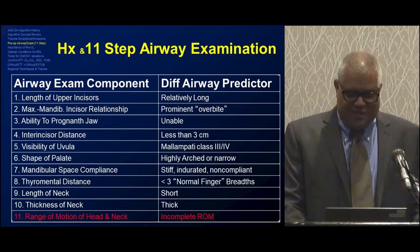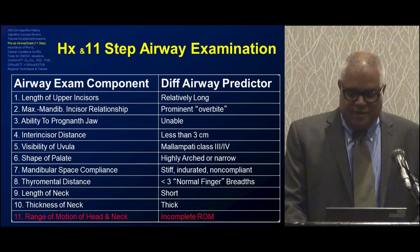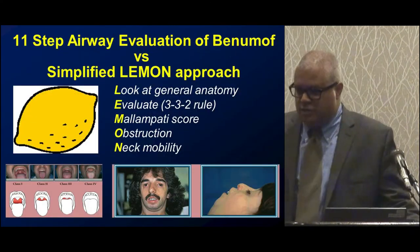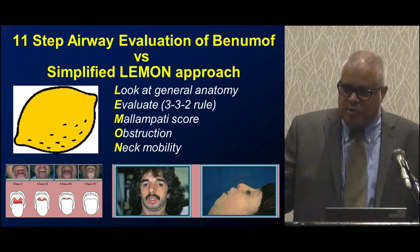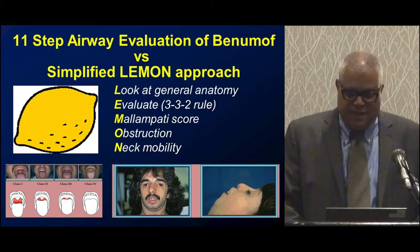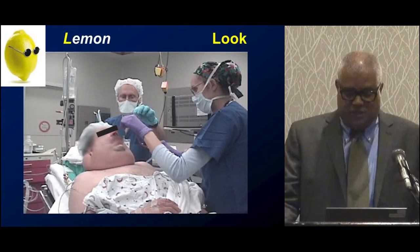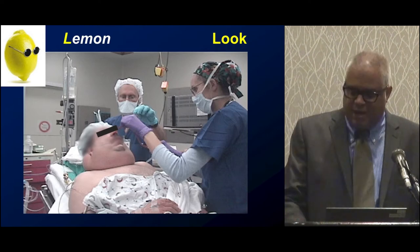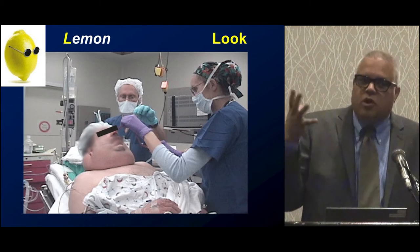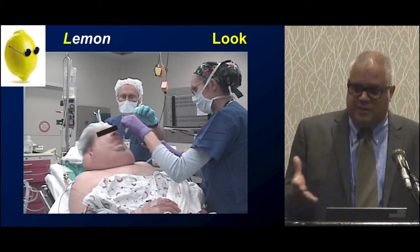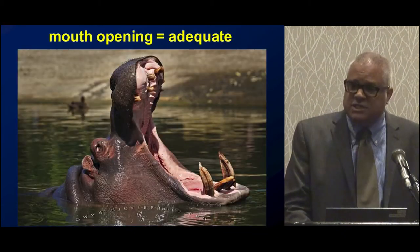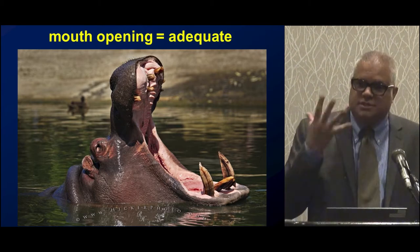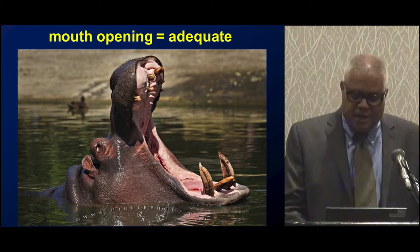Benumof's detailed airway assessment has 11 steps and is very long. A more practical shorter approach is to look at general anatomy first—a morbidly obese patient with barely visible neck anatomy will be difficult to intubate and very difficult to crike. Mouth opening is extremely important; mandibular fractures and facial trauma can affect it substantially. Three distances predict difficult intubation: the inter-incisor distance (greater than three finger breadths), the thiomental or hyomental distance, and the length of the mandible with how caudal the hyoid bone sits.